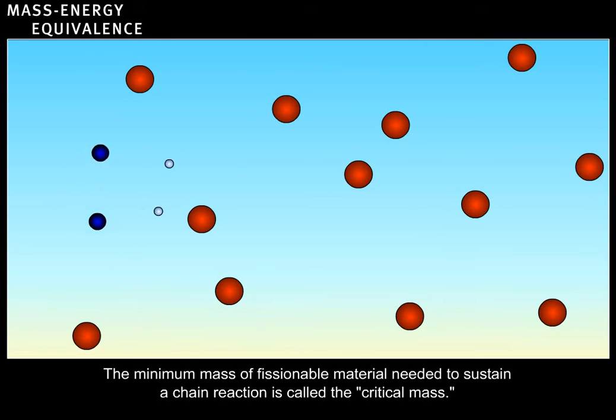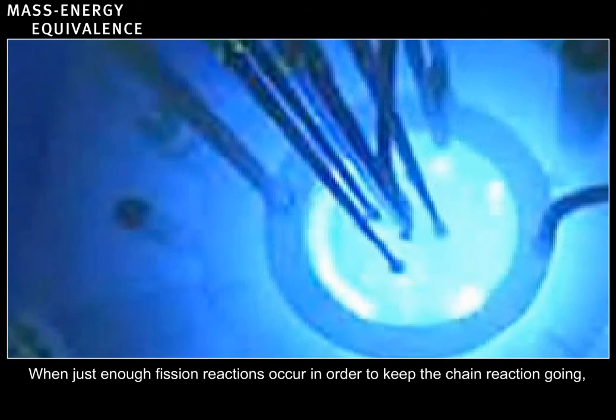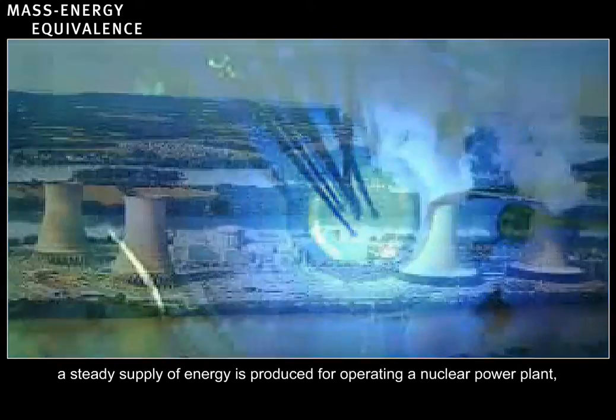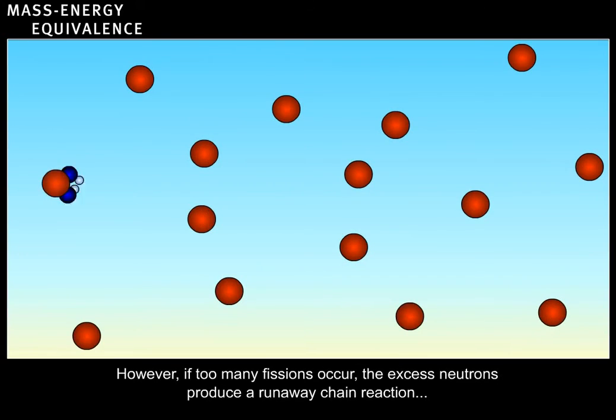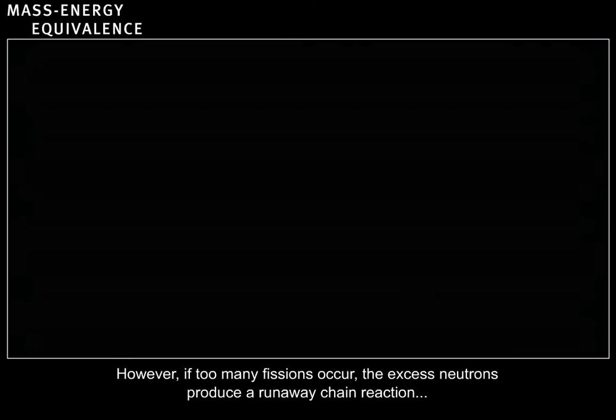The minimum mass of fissionable material needed to sustain a chain reaction is called the critical mass. When just enough fission reactions occur in order to keep the chain reaction going, a steady supply of energy is produced for operating a nuclear power plant. However, if too many fissions occur, the excess neutrons produce a runaway chain reaction with explosive consequences.